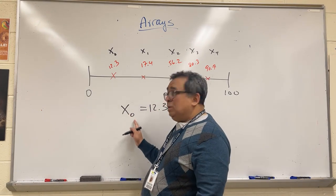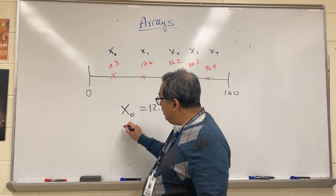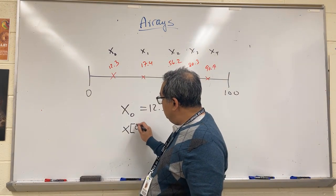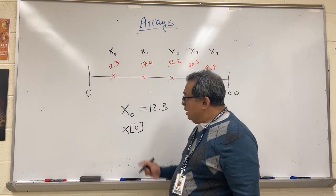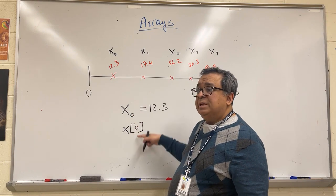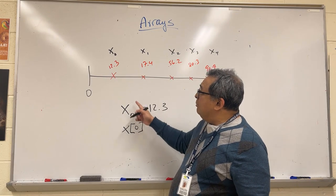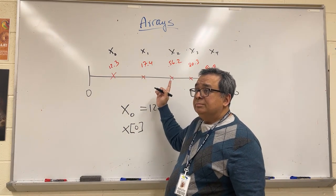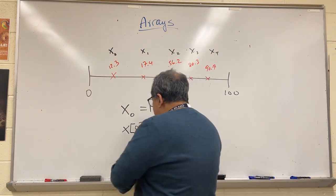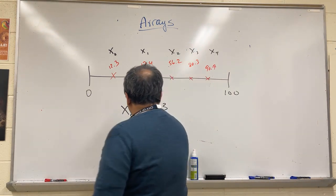For us to write it like this in computer science is difficult because to get this subscript we have to go on the keyboard and get a special symbol. So we don't usually write it like this in computer science. We're going to write it like this, but I need you to understand that these two things basically mean the same thing. The numbering starts at zero.